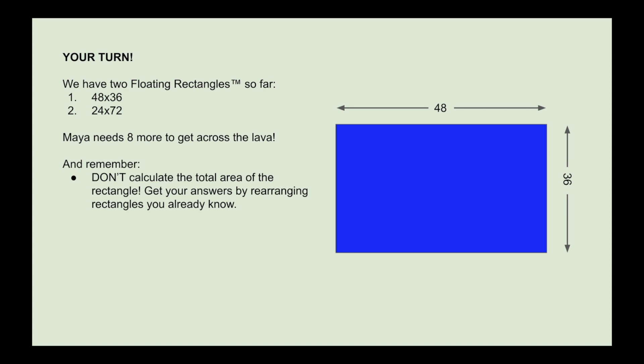And remember, you don't have to calculate—in fact you shouldn't, I'm encouraging you not to calculate the total area of the rectangle. Get your answers by rearranging the rectangles you already know. And don't just write down your answer, but also write down the strategy you used. For example, previously we took 48 and divided it by 2, and then at the same time took 36 and multiplied it by 2.